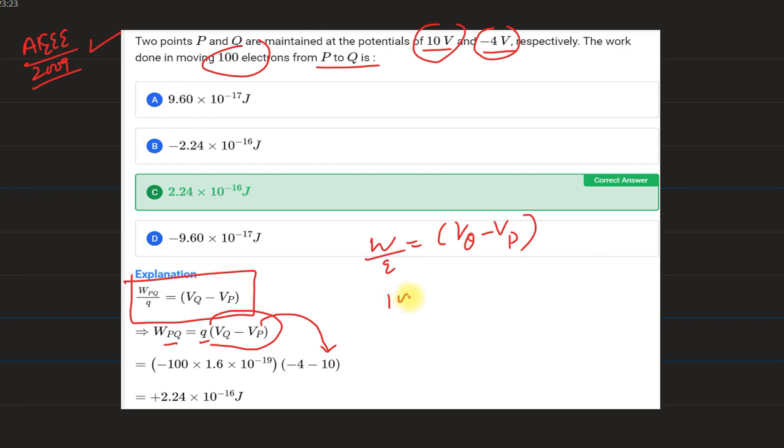It is like 100 multiplied by 1.6 into 10 raised to power minus 19, this is the charge. We have Q equals n times e formula. We will put charge here and after doing all this multiplication...